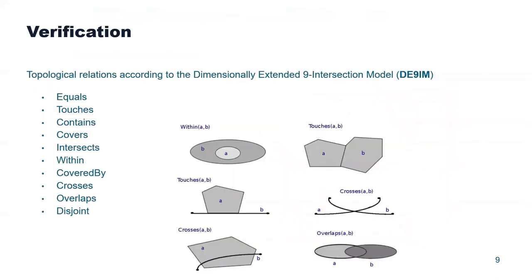Regarding verification, in this work we are interested in the popular dimensionally extended nine-intersection model, which involves these 10 topological relations. Their names are quite self-explanatory, and here you can see some examples: crosses, overlaps, etc.